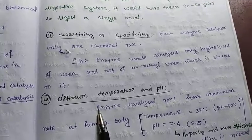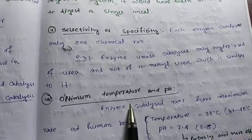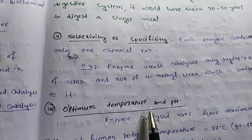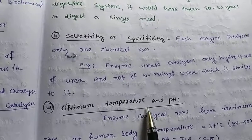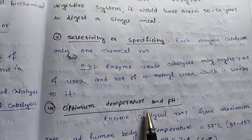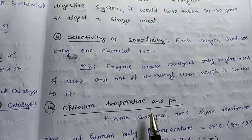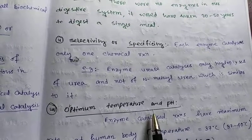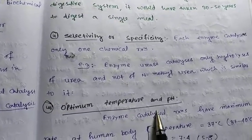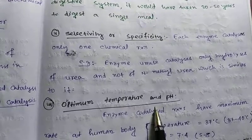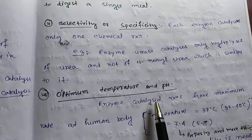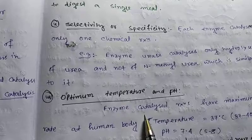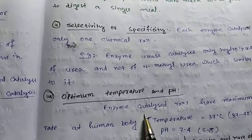Optimum temperature and pH: enzymes work best at an optimal temperature. For most enzymes in the human body, the optimal temperature is 37 degrees centigrade. At low or high temperatures, enzyme activity decreases.